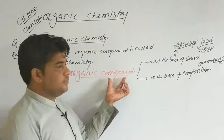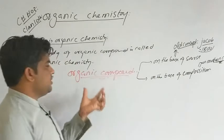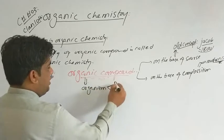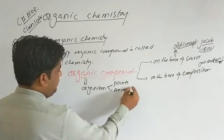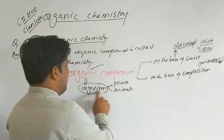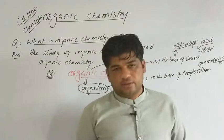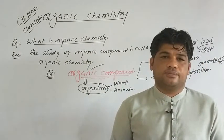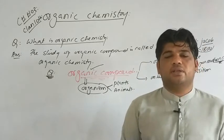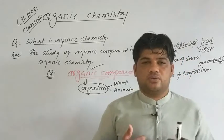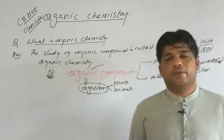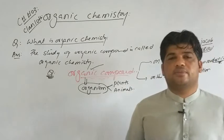What is an organic compound on the base of source? The name itself says 'organic' — from organisms. Organisms means plants and animals. So a compound whose source is organisms — meaning it is formed only inside plants and animals — that compound is organic. Its source is organisms, that is plants and animals.